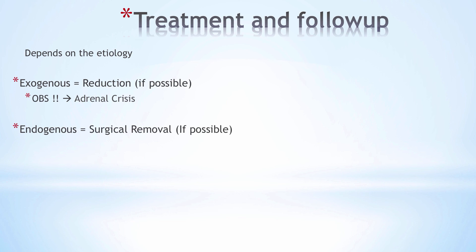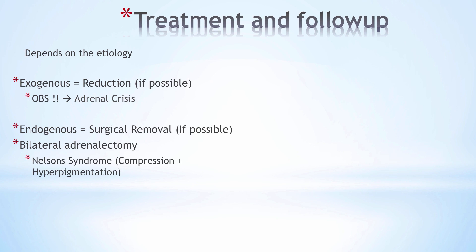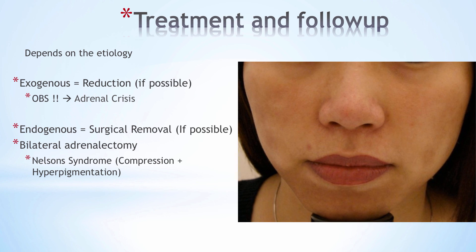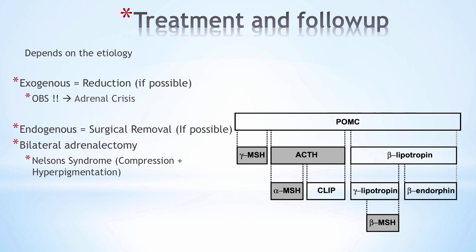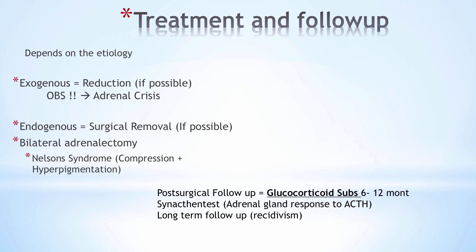If an adenoma is responsible, surgery is the approach. In cases of ectopic Cushing, a bilateral adrenalectomy may be indicated. One complication of this is Nelson syndrome: removal of the adrenal glands causes the pituitary to secrete even more ACTH, grow in size, and potentially compress surrounding structures. Hyperpigmentation also occurs due to high levels of MSH, which shares the same precursor as ACTH — namely POMC. Post-surgery, most patients require glucocorticoid substitution for a period of time, and after bilateral adrenalectomy, lifelong glucocorticoid substitution is required.